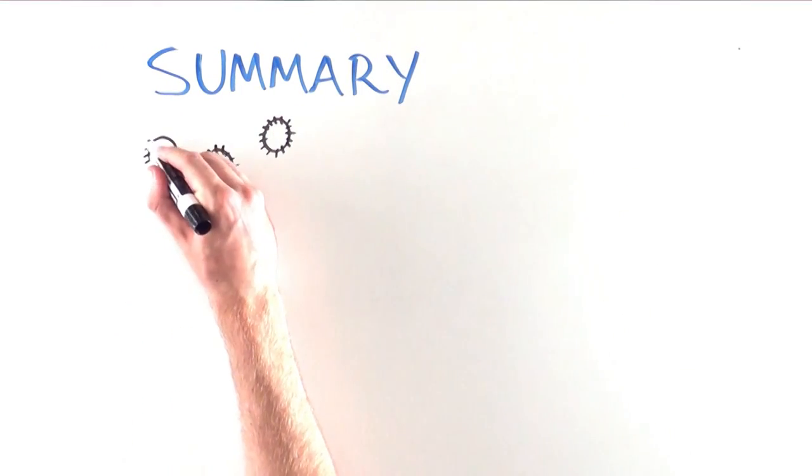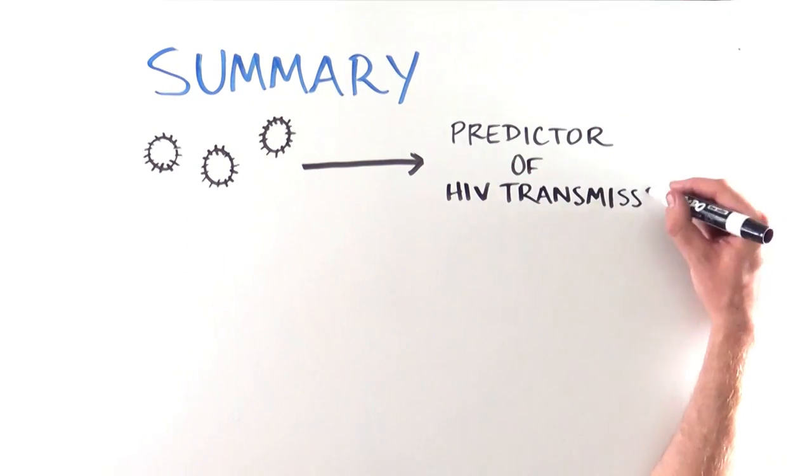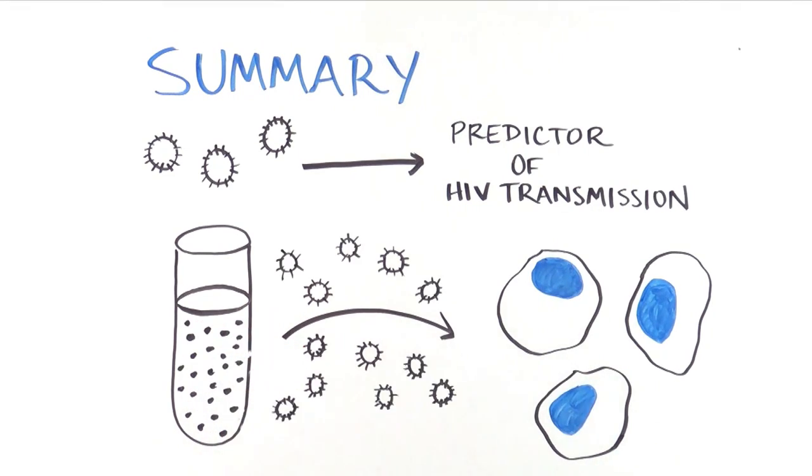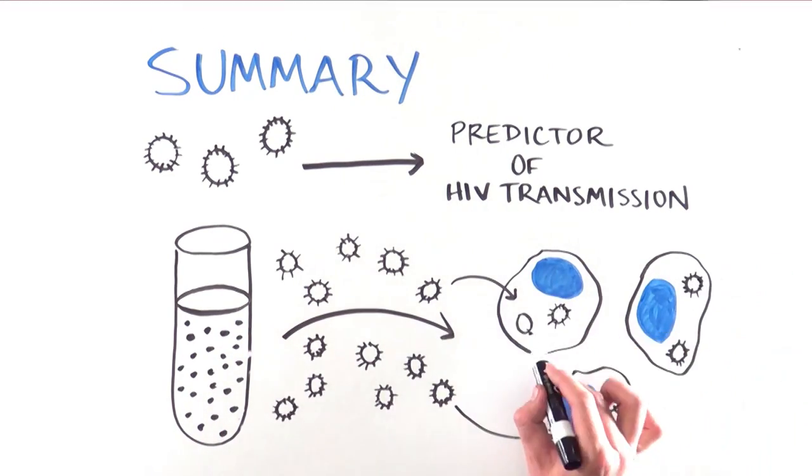So to take away, HIV viral load is a major predictor of the risk for transmission of HIV. It makes sense. More virus present in body fluids, more virus available to enter a partner's cells and establish infection.